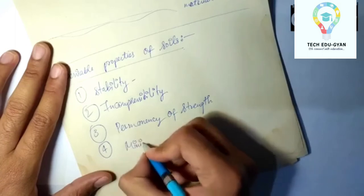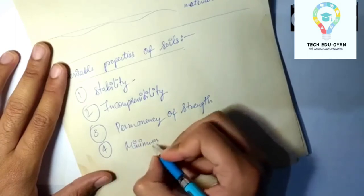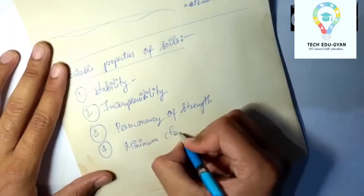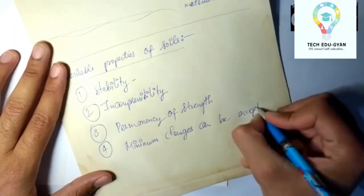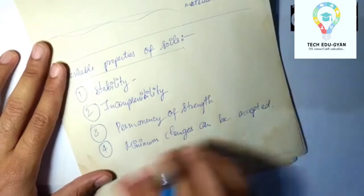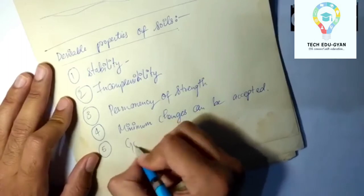What does it mean by minimum changes? Like in adverse conditions: adverse rainfall, heavy rainfall, heavy snowfall, high temperature, or lowest temperature. Minimum changes can be accepted under adverse conditions, but not in normal conditions.